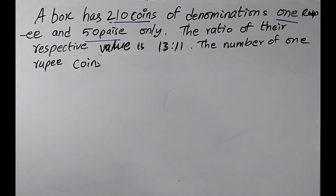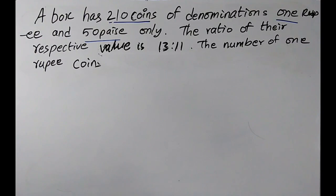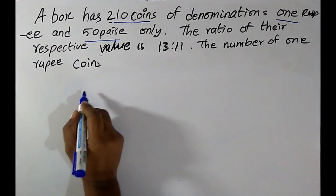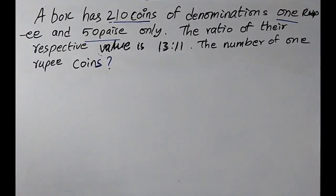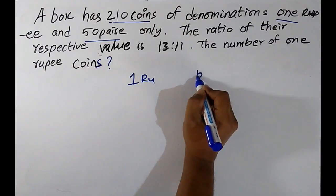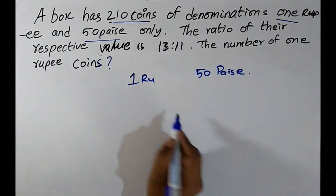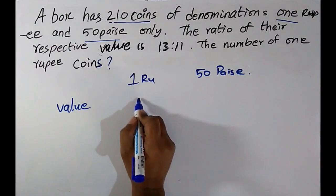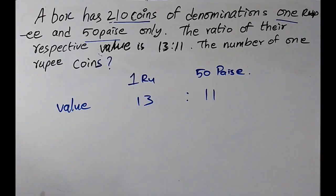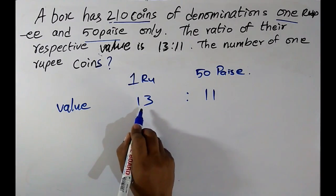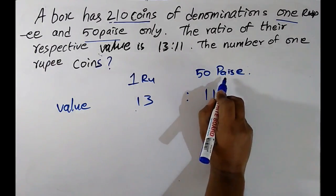Here is one more problem where the number of coins is given and the values ratio is also given. A box has 210 coins of denomination 1 rupee and 50 paise only. The ratio of their respective values is 13:11. Find the number of 1 rupee coins. The value ratio is 13:11, meaning for every 13 rupees of 1-rupee coins there are 11 rupees of 50 paise coins.